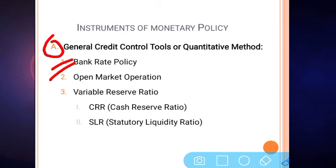The next tool is open market operation. Open market operation is a direct step of the RBI. The bank rate policy is not a direct step — it is an indirect step conducted through commercial banks — while in open market operation, RBI is directly involved in controlling money supply in the market.